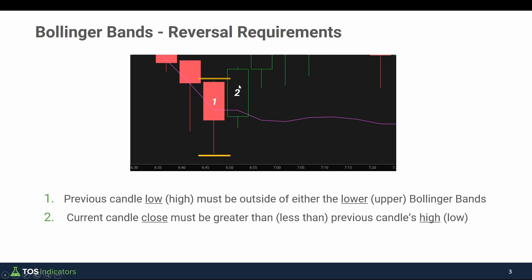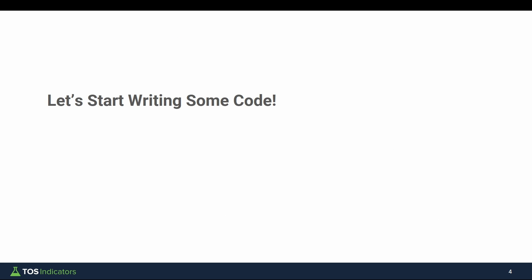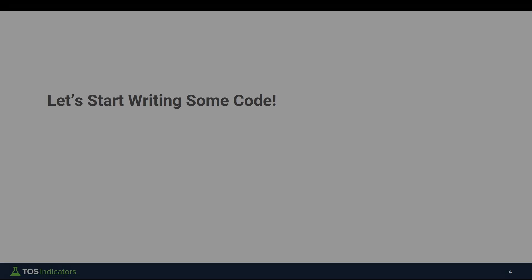Requirement number two is the current candle's close must be greater than the previous candle's high — this is for a long side setup. Looking at candle number two, we can see the closing price well above the previous candle's high. This is the reversal candle in which we would expect to see a buy side arrow forming underneath. So that's the basic gist of what we're looking to build. We can now translate these requirements to code and start diving into thinkorswim.